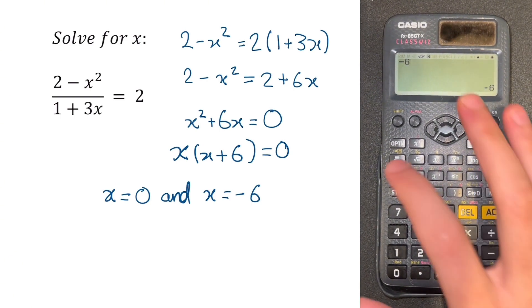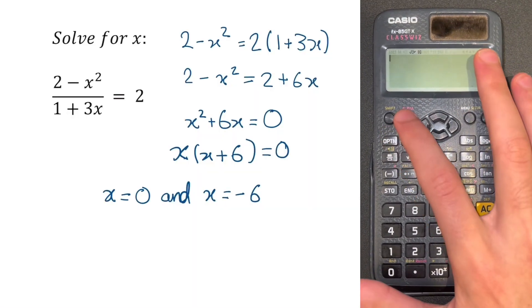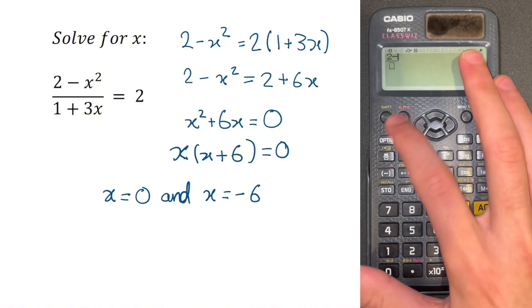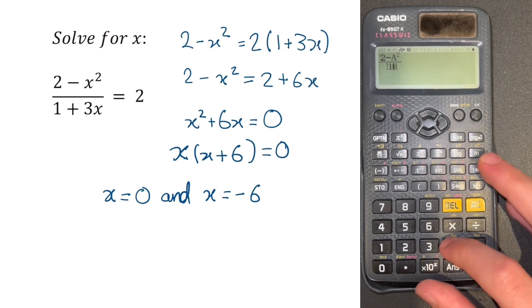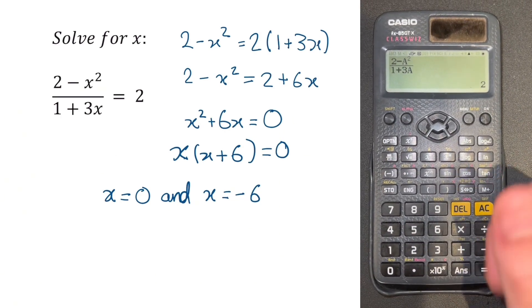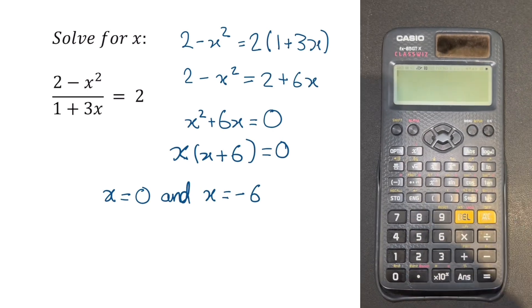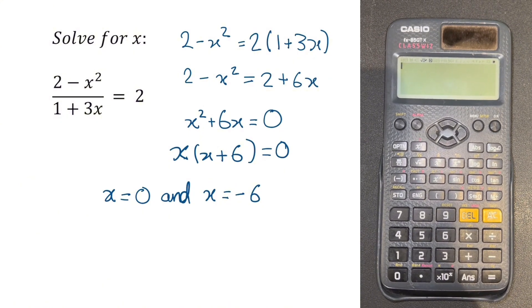First, we write minus six into our calculator, then store it to any letter we want. We'll choose A for this. Then if X equals minus six is the correct answer, then if we put it into our original equation, it should give us the right value. So we're going to do two minus X squared, but instead replace it with A over one plus three A and see if that's equal to two. And yes, it is. So that's the correct answer. You can also check X equals zero is a correct answer by doing the same thing, but with X equals zero instead of minus six.